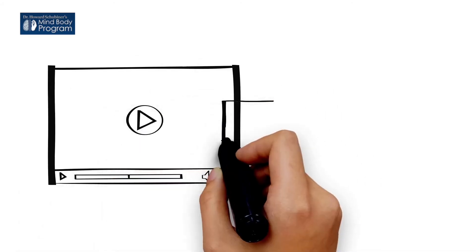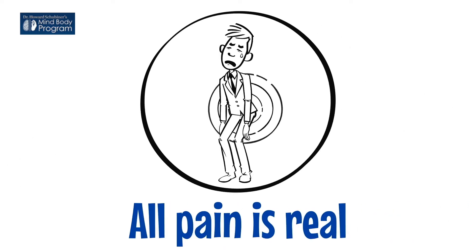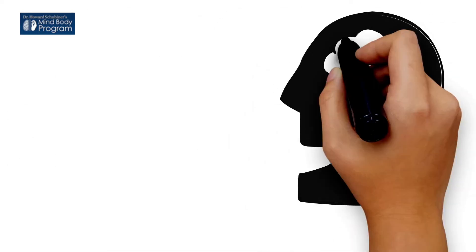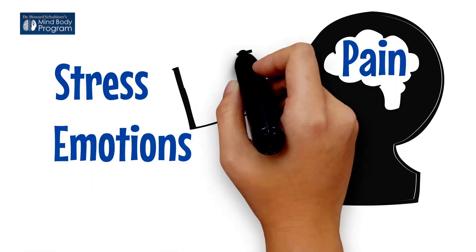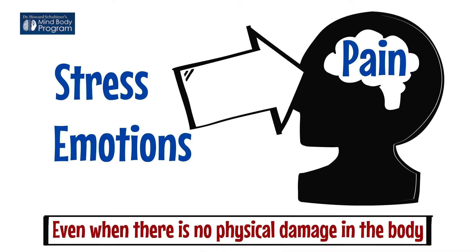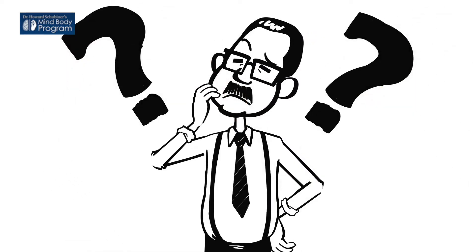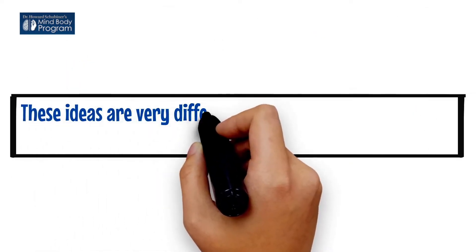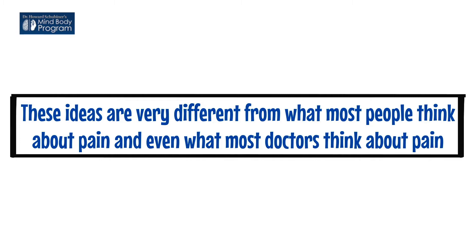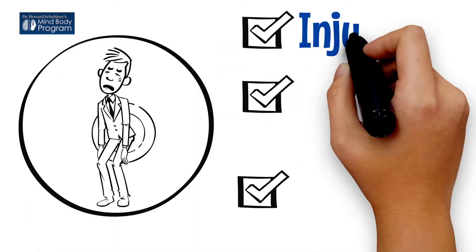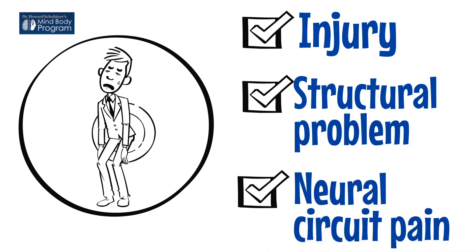If you have watched some of our other videos, you now know more about how the brain works. You know that all pain is real, and that all pain is actually created by the brain. And you know that stress and emotions can cause the brain to generate pain even when there is no physical damage in the body. But how do you know if you might have a mind-body disorder? How can you tell if your pain is due to an injury or a structural problem in the body, or if you are in fact suffering from neural circuit pain?